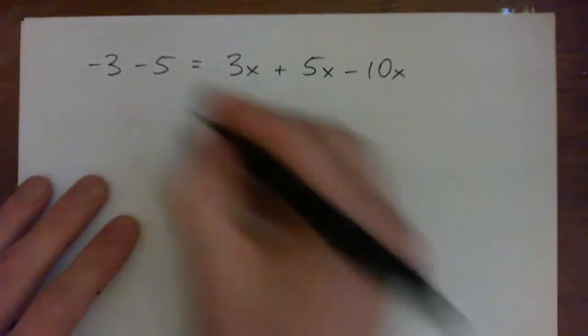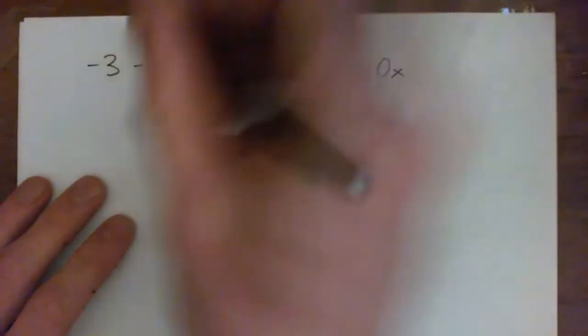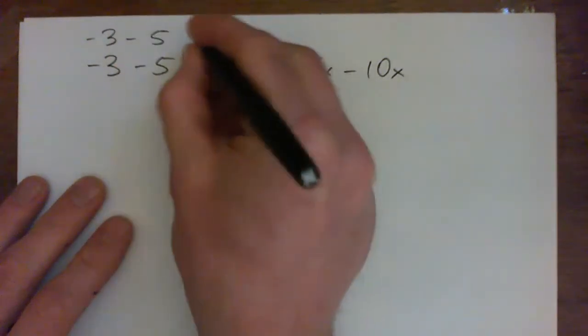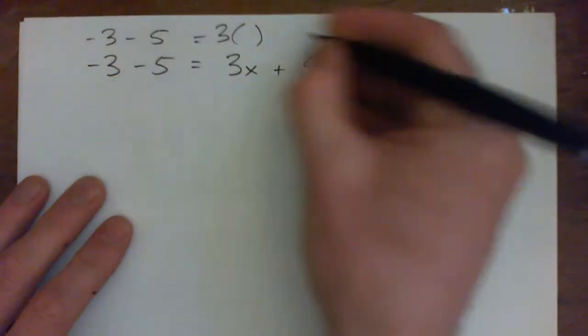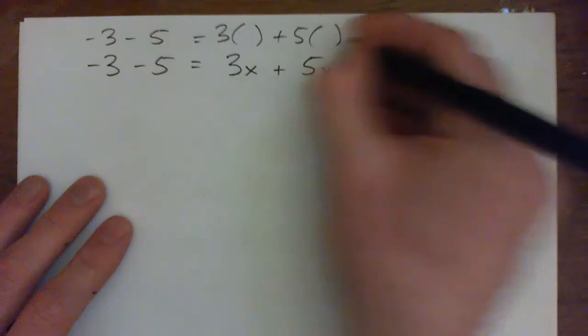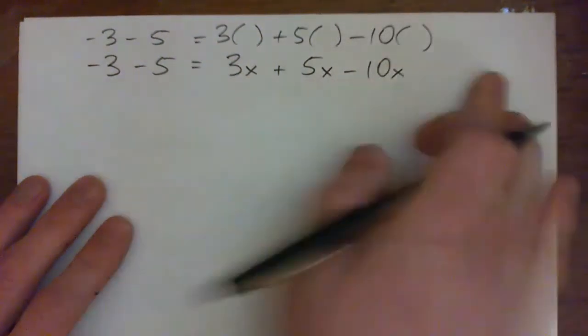And real quick, what that means is like, if instead of x you had kind of blank spaces, you know, what number could you fit into these blank spaces to make the thing true?